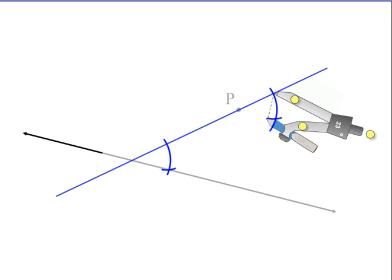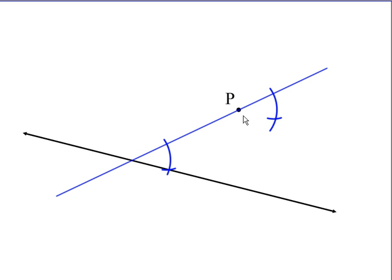Now I'm done with my compass. Now I'm ready to get my ruler and complete the line from point P through the point of intersection of the arcs.